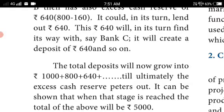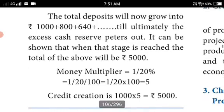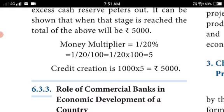The commercial bank keeps 20% of whatever the customer deposits. The total deposit will now grow: 1000 plus 800 plus 640, and so on, until the excess cash reserve peters out. At that stage, the total will be 5000. The money multiplier is calculated as 1 divided by 20%, which is 1/20 = 5. So 1000 multiplied by 5 equals 5000 — that is the credit creation.